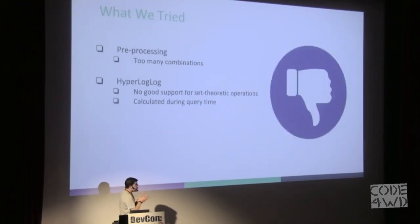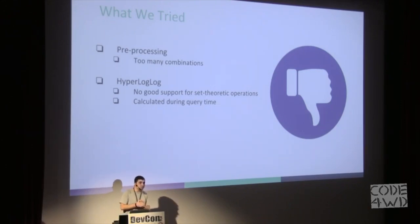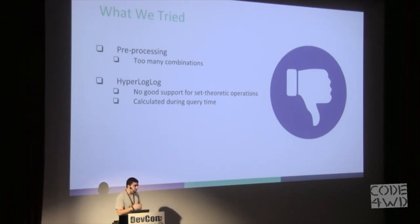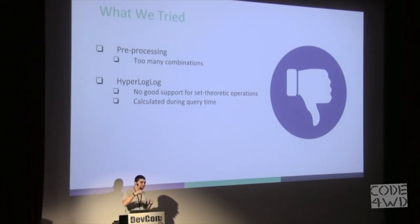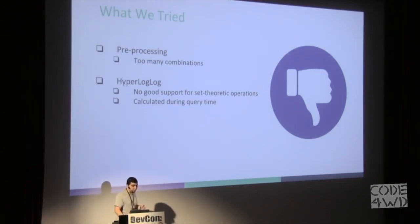At this point we understood we needed to change our approach. One thing we considered was pre-calculating all the different combinations and storing the results in a very fast key-value store, so no matter what combination came in, we could just look up the key and get the value. But we quickly understood that we had too many combinations, and this approach was not valid.